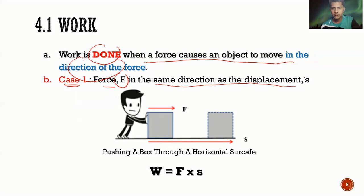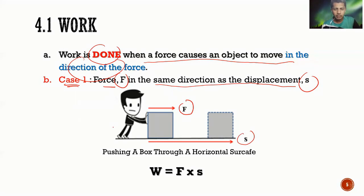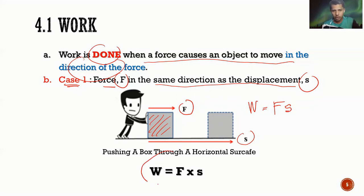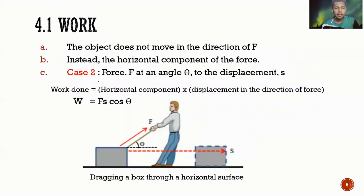Kita ada daya F menolak dan sesaran S, maka kerja yang dilakukan adalah bersamaan dengan daya yang diberikan didarabkan dengan sesaran — displacement. So formula: W = F × S.